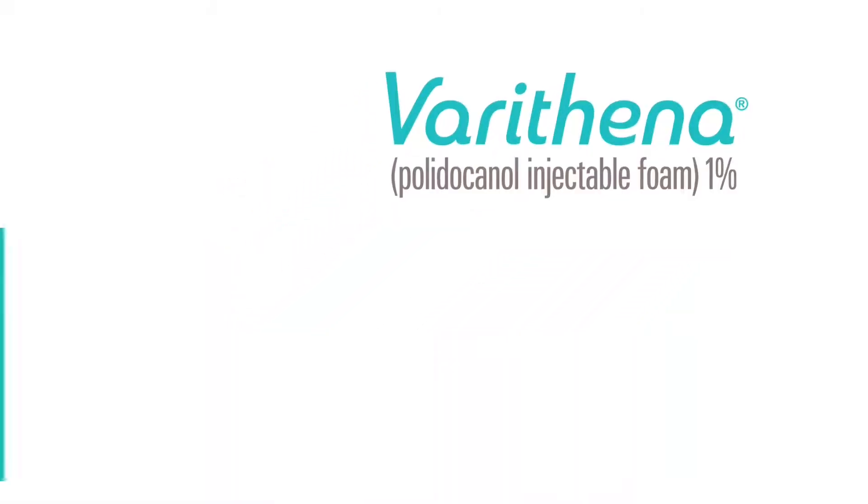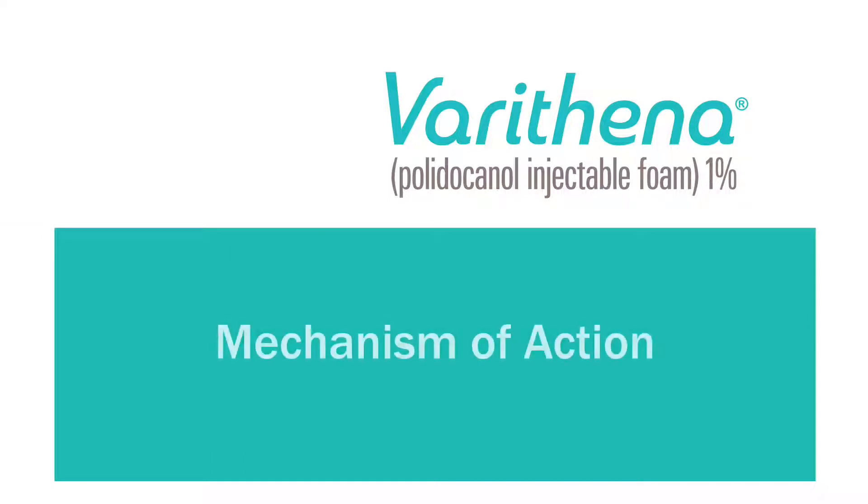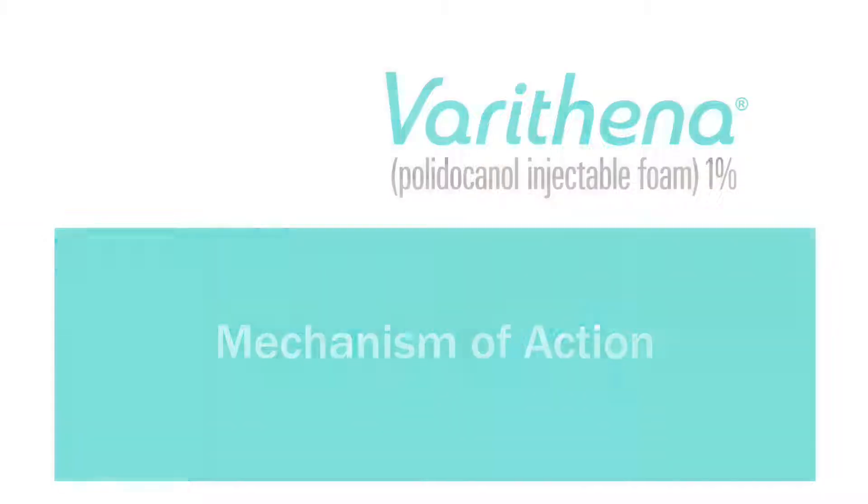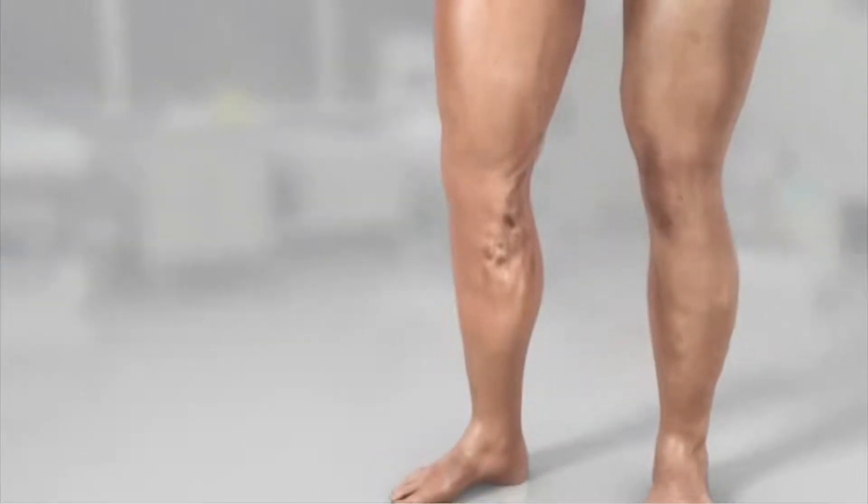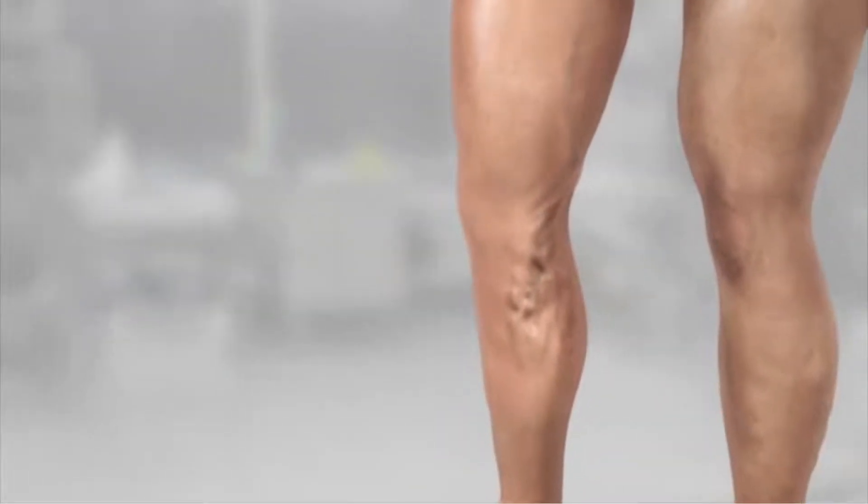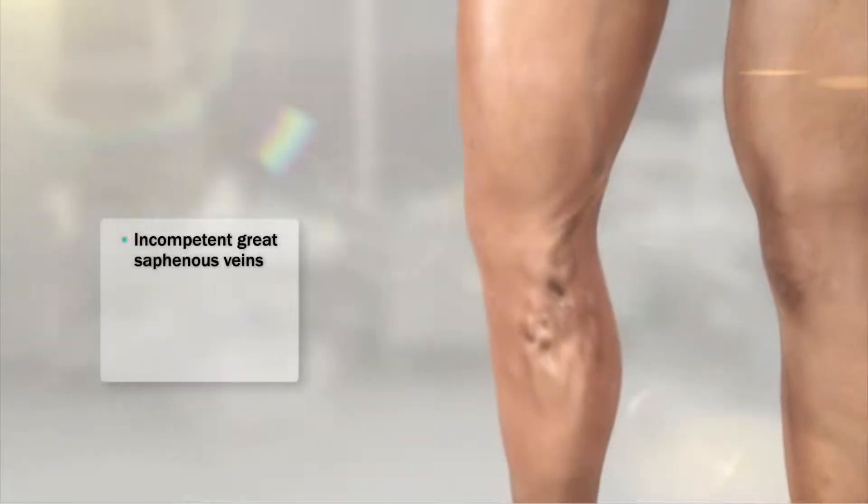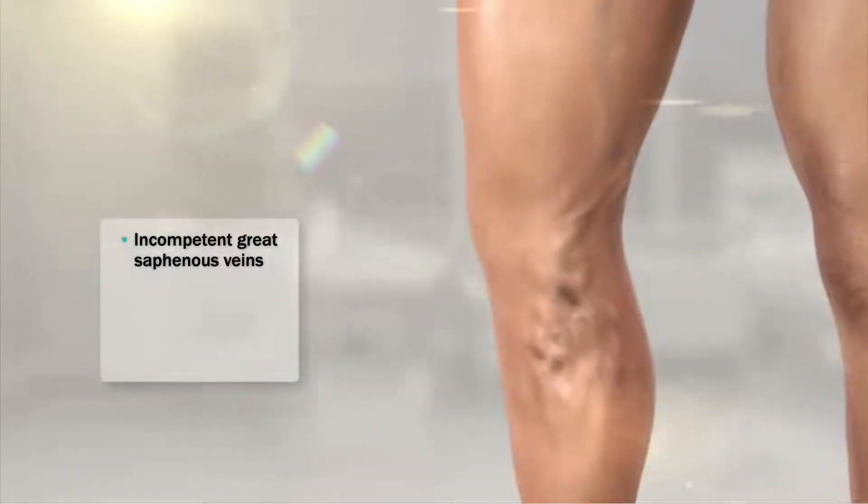Varathena Polydokanol Injectable Foam 1% Mechanism of Action. Varathena Polydokanol Injectable Foam 1% is the first and only FDA-approved foam for the treatment of incompetent great saphenous veins, called GSV for short.